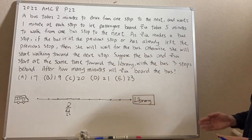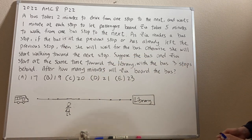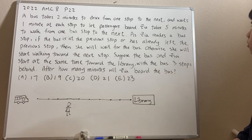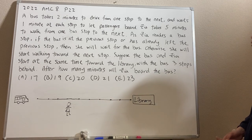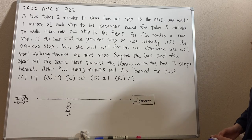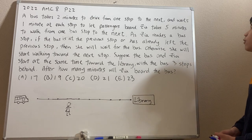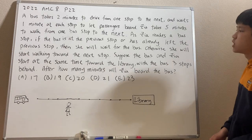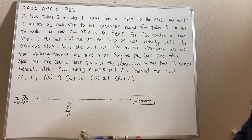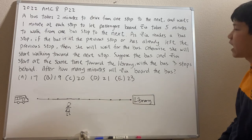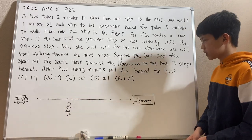The problem reads: a bus takes two minutes to drive from one stop to the next and waits one minute at each stop to let passengers board. Zia takes five minutes to walk from one bus stop to the next. As Zia reaches a bus stop, if the bus is at the previous stop or has already left the previous stop, then she'll wait for the bus. Otherwise, she will start walking towards the next stop. Suppose the bus and Zia start at the same time, with the bus three stops behind. After how many minutes is Zia aboard the bus?